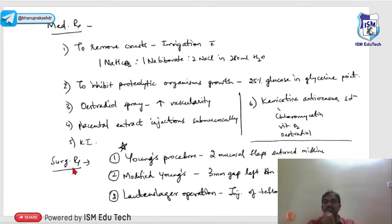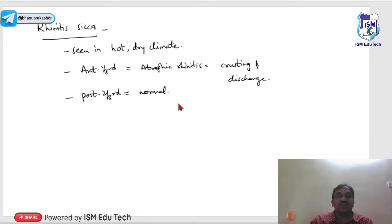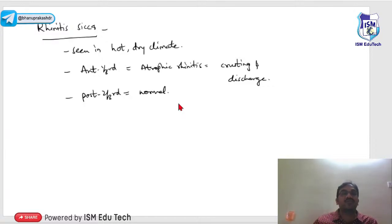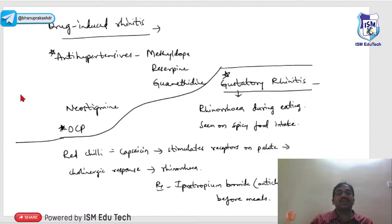Rhinitis sicca is seen in hot, dry climates and in desert areas — saline drops are given to keep the nasal mucosa moist. Rhinitis caseosa involves a whitish cheesy material deposited in the nose; nasal washes and anti-inflammatory drugs are given. Drug-induced rhinitis is caused by antihypertensives like methyldopa, reserpine, guanethidine, and — most importantly — oral contraceptive pills (OCP), which are currently among the most common causes of drug-induced rhinitis.